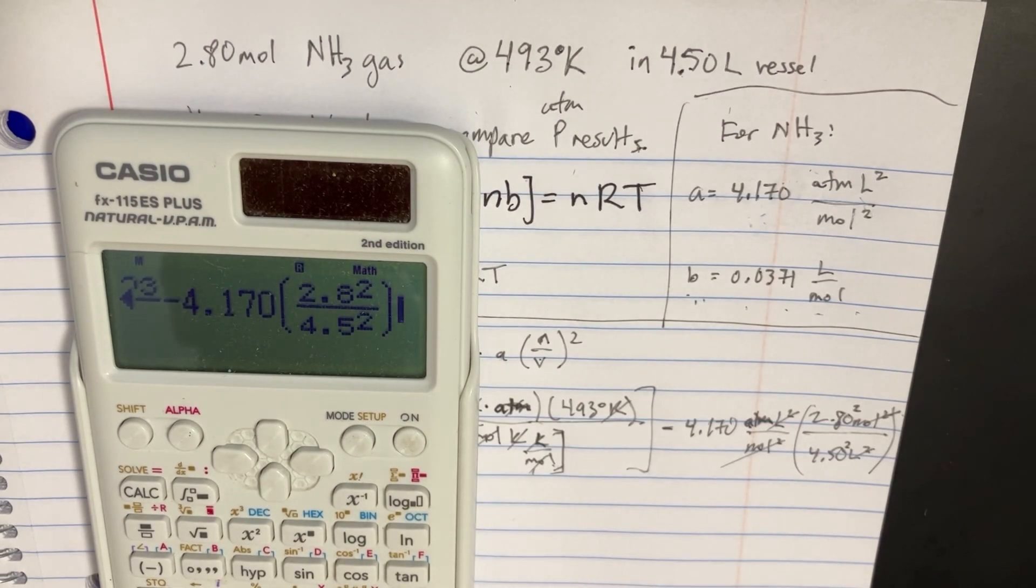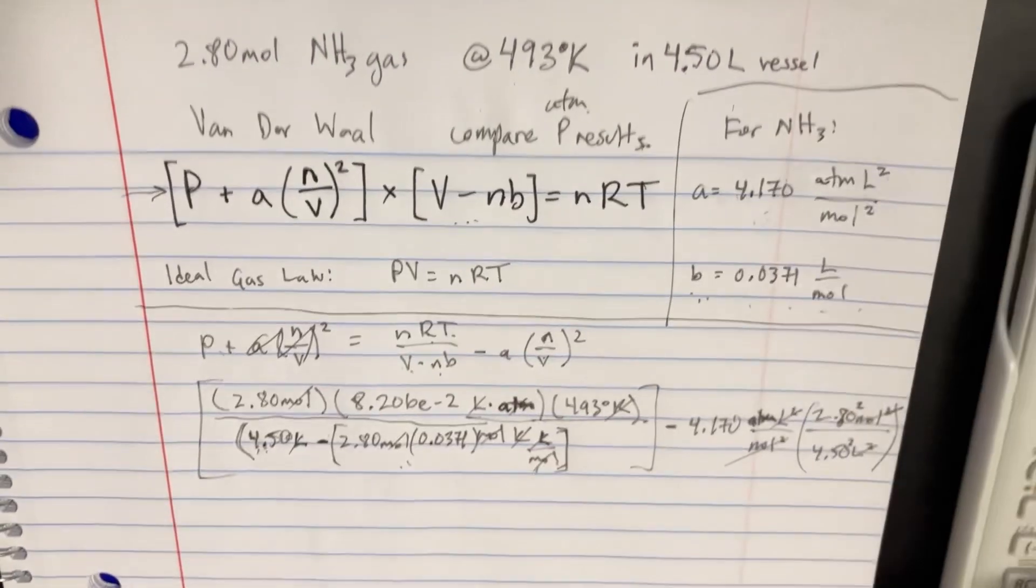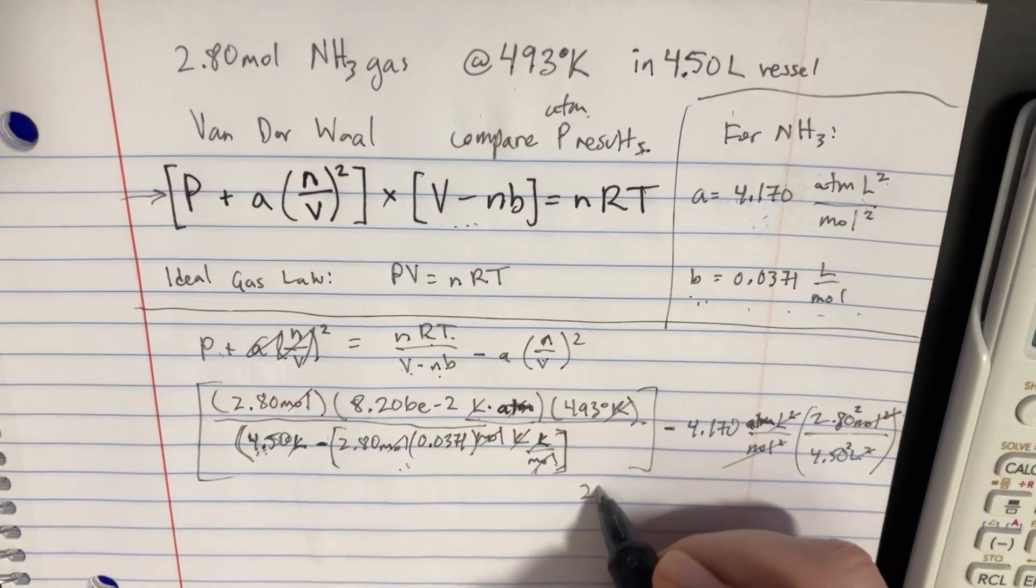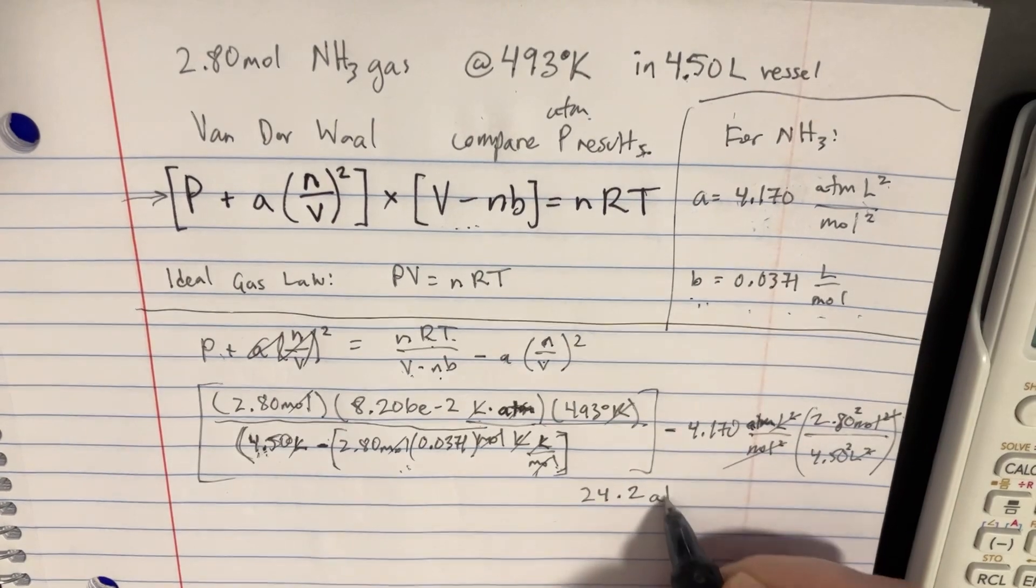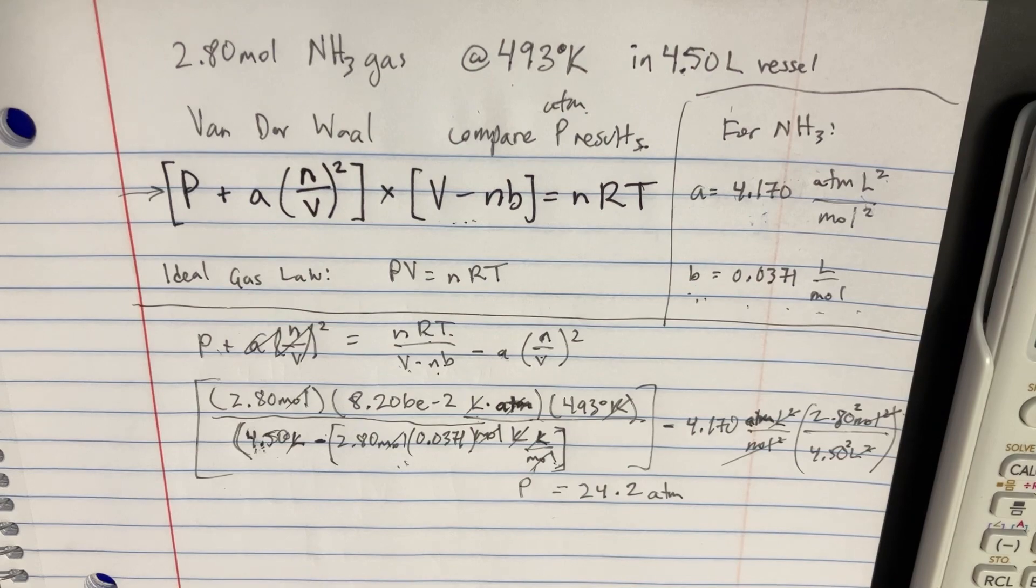So now we can just get the answer here. It's going to be 24.2. We have to round that to 3 significant figures. So that's going to be the answer using the Van der Waals equation.